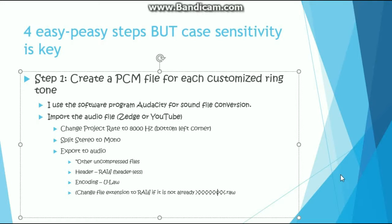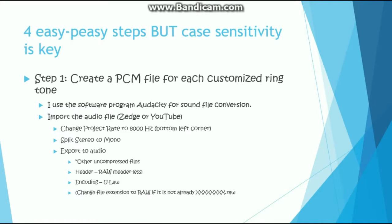Once you open the file in Audacity, you are going to change the project rate to 8,000 hertz, split the stereo to mono, export the audio and give it the required settings.